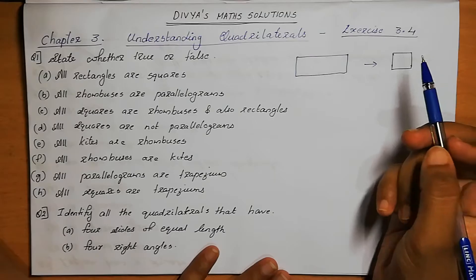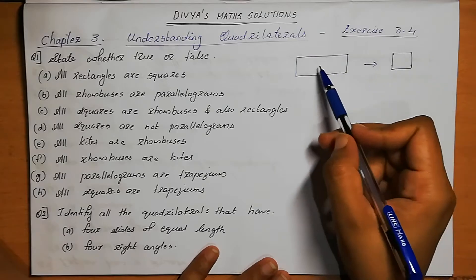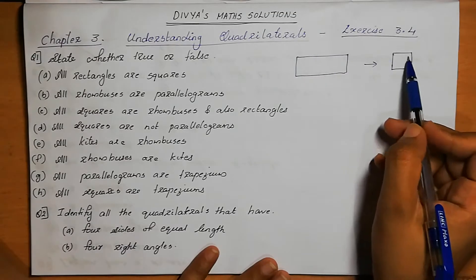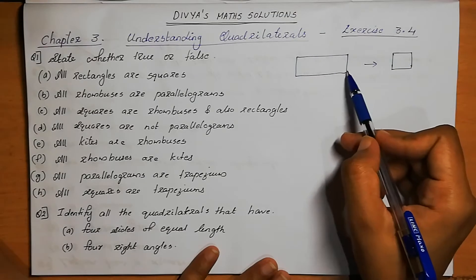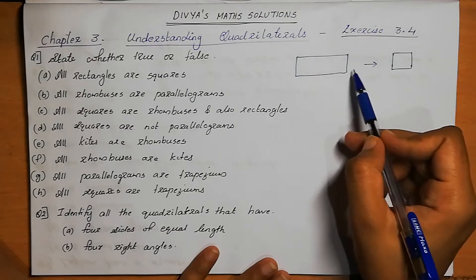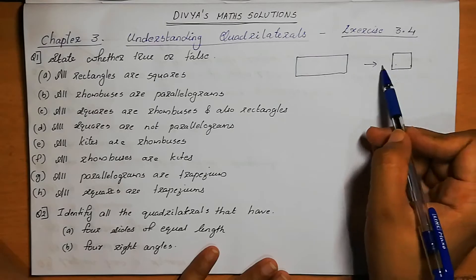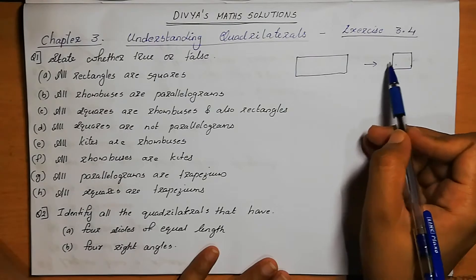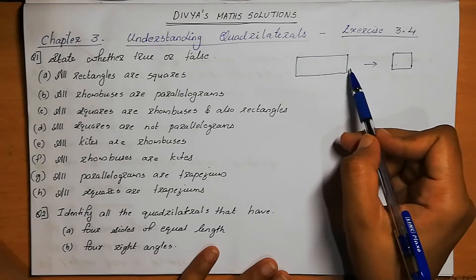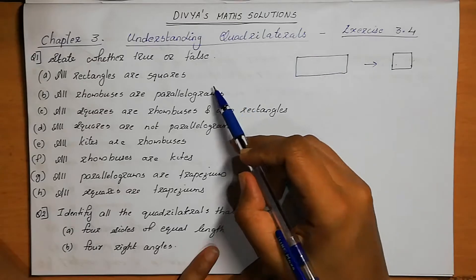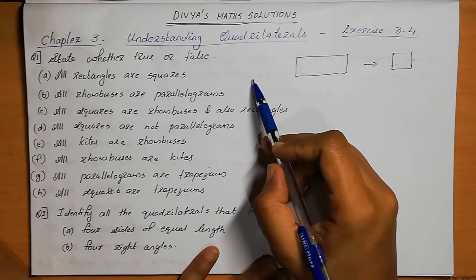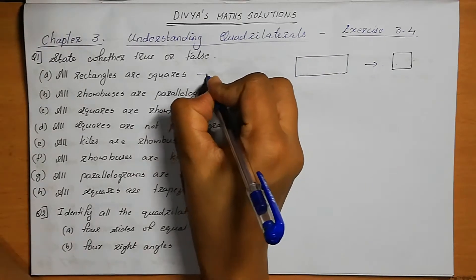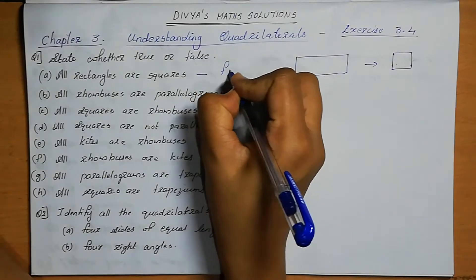Some rectangles are squares — that means a square can be a rectangle, because opposite sides are equal. But all rectangles are squares is not possible. So this is a false statement.